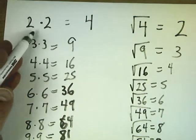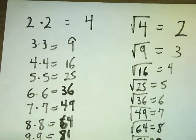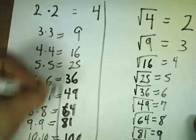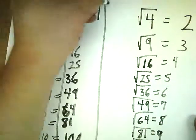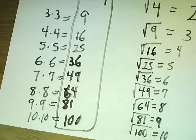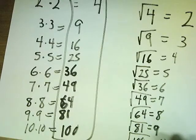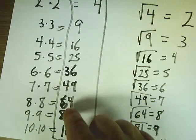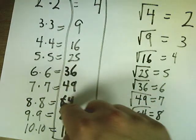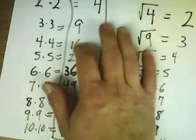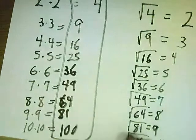The squares, of course, are numbers times themselves. So 2 times 2 is 4, 3 times 3 is 9, 4 times 4 is 16. These are your squares. And sometimes those numbers are hidden inside of a radical. Usually the ones you're going to use for this process are probably 64 and below — so 64, 49, 36, 25, 16, 9, and 4.